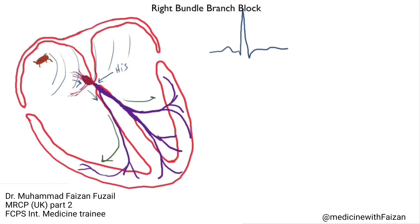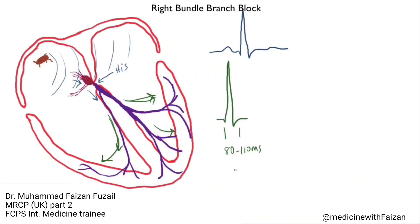The conduction velocity is literally meters per second. If everything is working properly, if the right side of the heart and the left side of the heart get the signal more or less at the same time, the whole entire heart winds up contracting in a very efficient manner, giving you a very narrow QRS complex. The normal QRS duration is usually 80 to maybe 110 milliseconds. Anything greater than 120 milliseconds is consistent with some kind of conduction system disease, and you usually start looking for a bundle branch block.